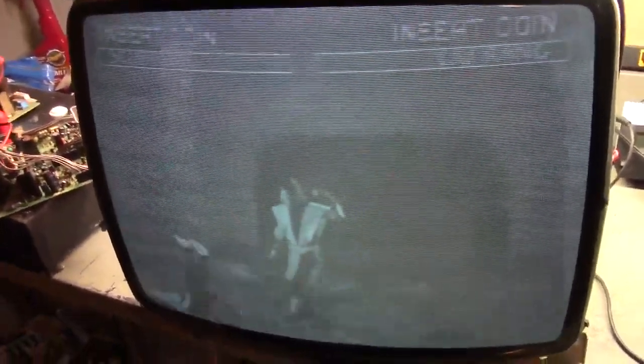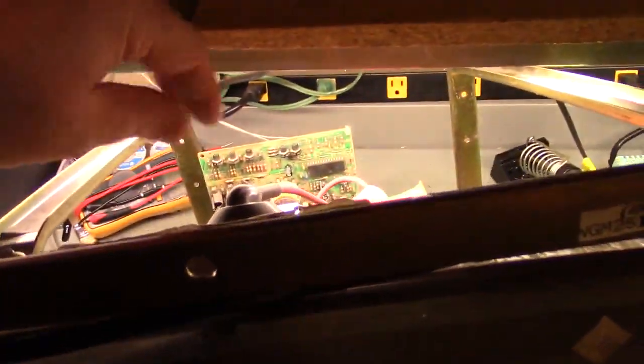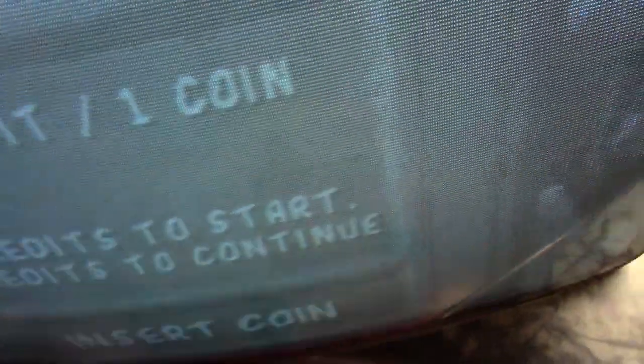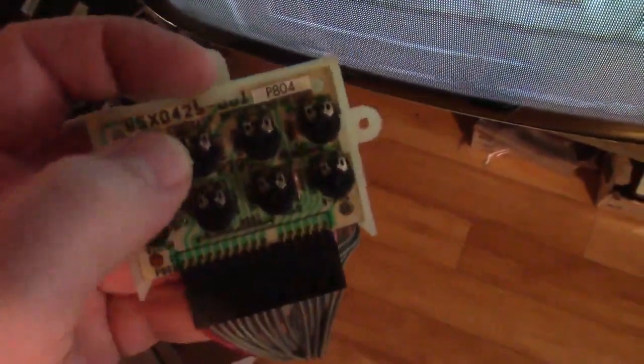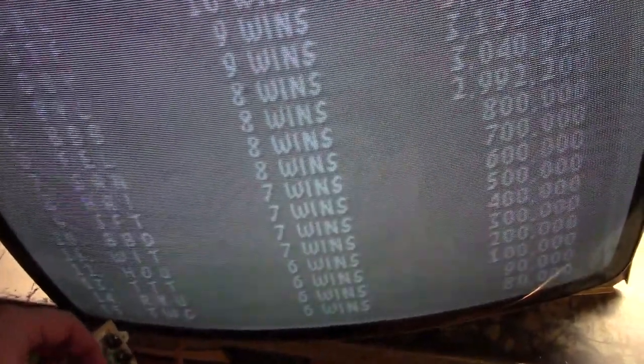All right, so what I have here on the bench today is a Wells Gardener K7400 and as you can see it's basically just black and white. It's not an issue of the color pots on the neck board - you can adjust those to your heart's content, nothing changes. If you look here on the remote board you can see there's contrast right here. If I turn this up and down it doesn't make any difference at all. So I have no contrast control.